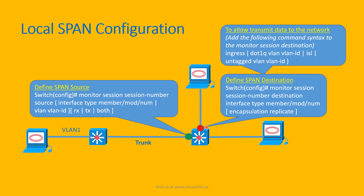By default, the destination port is not allowed to transmit data back to the network. To override this SPAN configuration, you need to add to the monitor session destination command the keyword ingress. If the port is using 802.1Q, specify dot1q vlan [VLAN-ID]. If it is not encapsulated, enter dot1q and specify the VLAN ID.